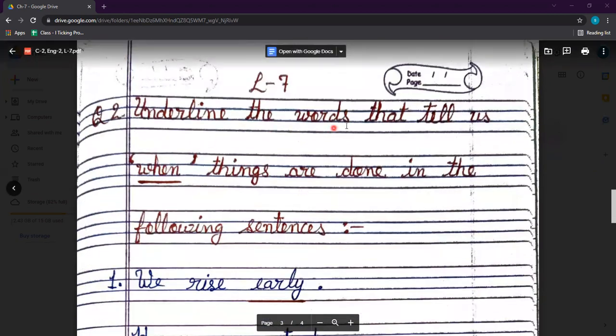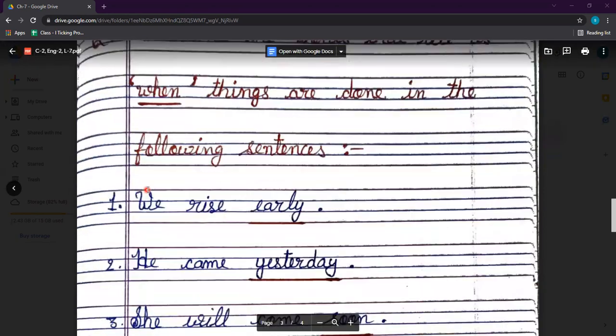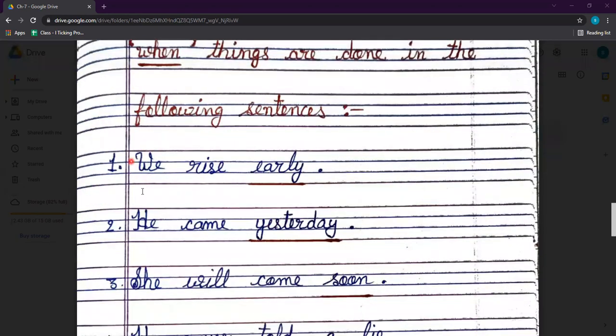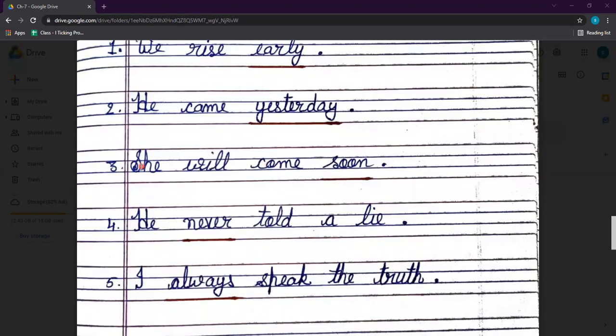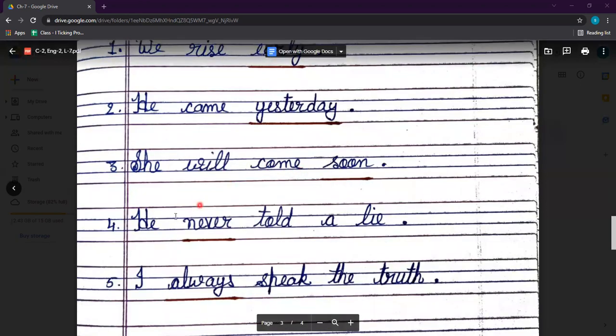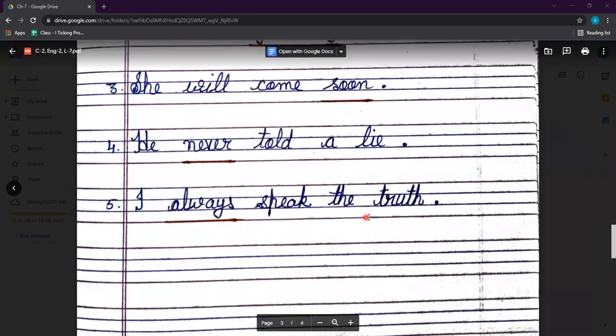No. 2 Question, underline the words that tell us when things are done in the following sentences. When? Noted on this word. No. 1, we rise early. He came yesterday. She will come soon. He never told a lie. I always speak the truth.